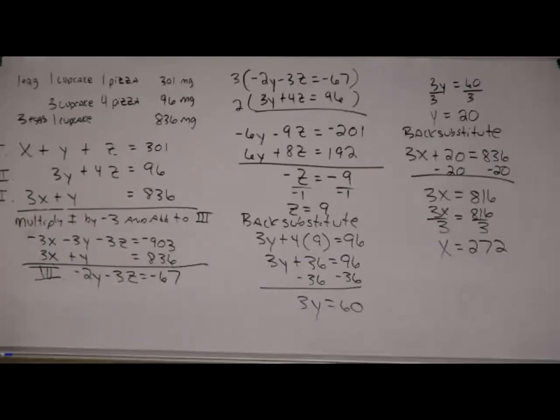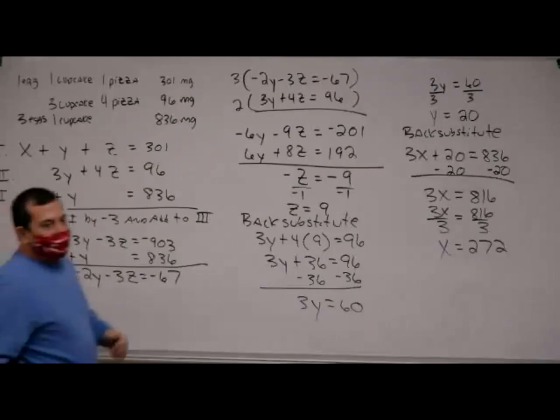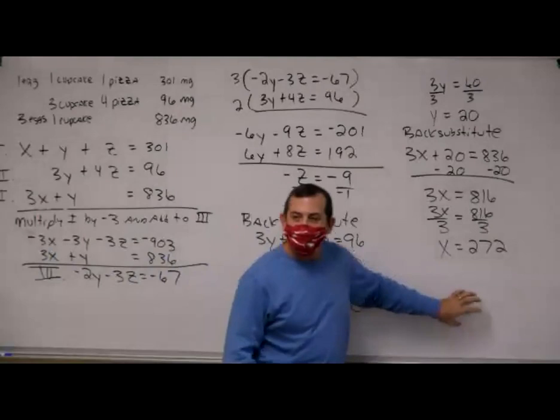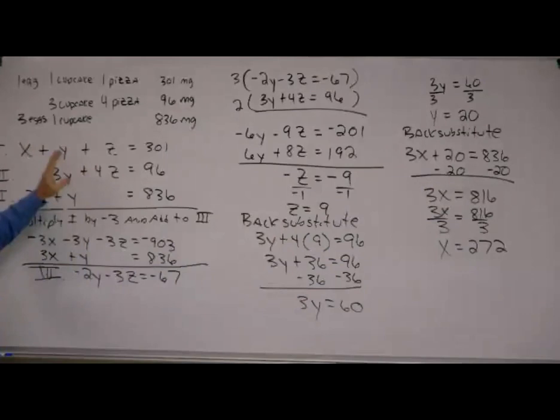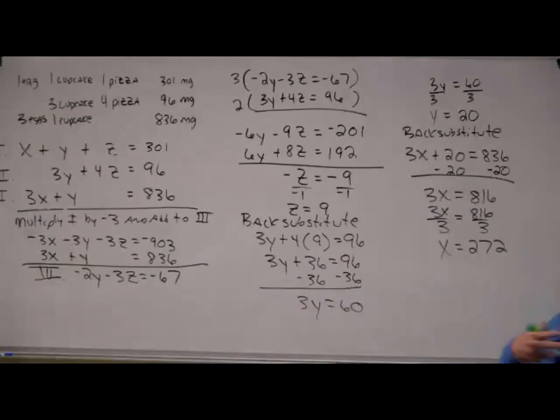So pizza has 9 milligrams of cholesterol per slice, cupcakes have 20 milligrams each, and eggs have 272 milligrams each — quite a bit more. Math Lab will ask you to state how much cholesterol each item contains. Pretty much the same process as 3.5 — you just had to figure out your equations first. Now we're going to do a little graphing.